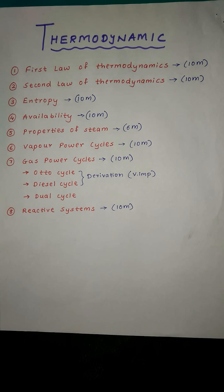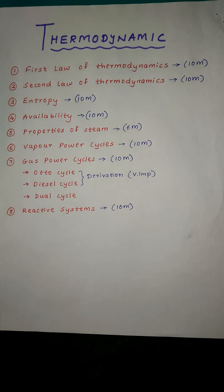Chapter number nine: Gas Power Cycle — one numerical for 10 marks. This chapter has three types of cycles: Otto cycle, Diesel cycle, and Dual cycle. Otto cycle and Diesel cycle are very important for derivations; all three cycles are important. One problem is fixed in question five — it can be Otto, Diesel, or Dual cycle.